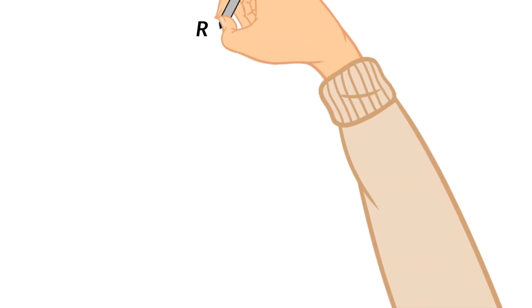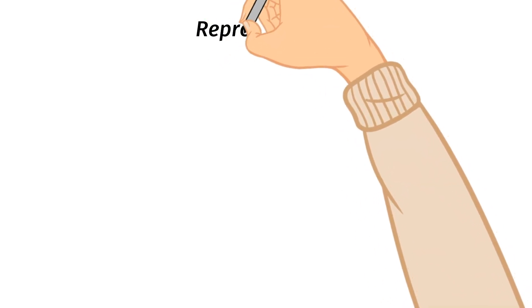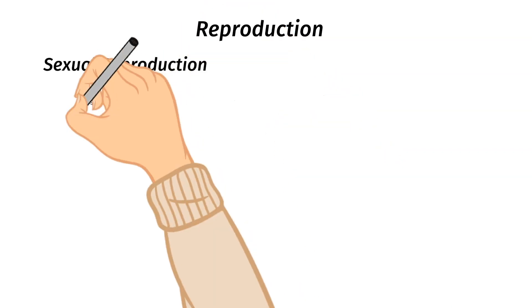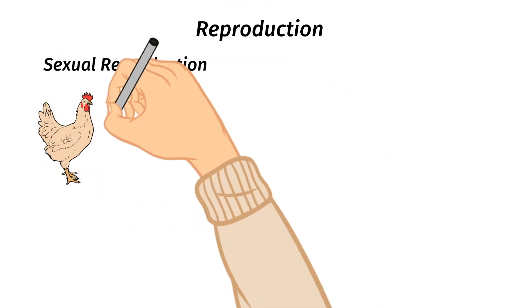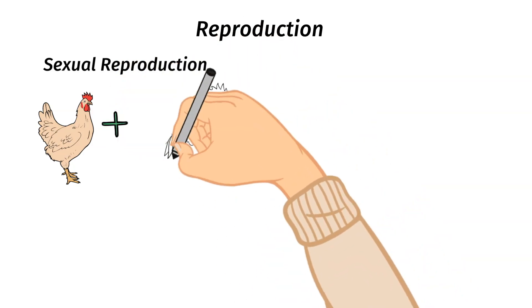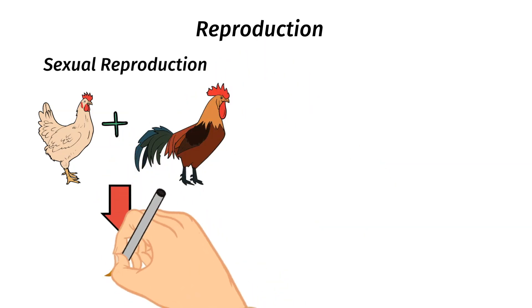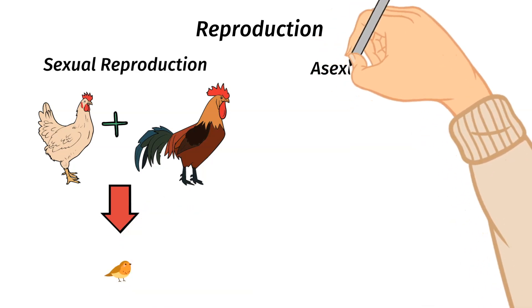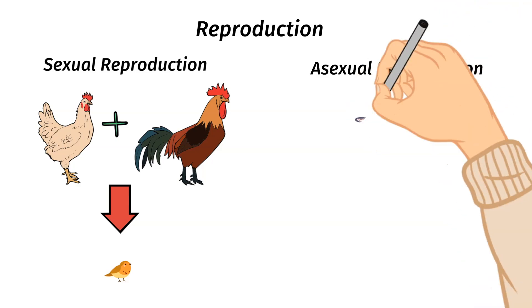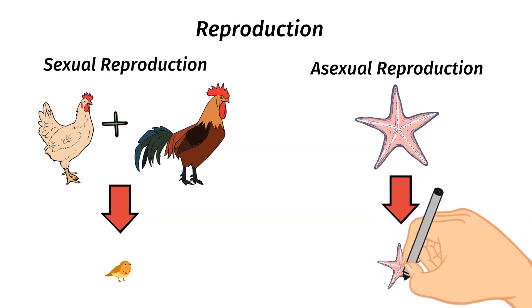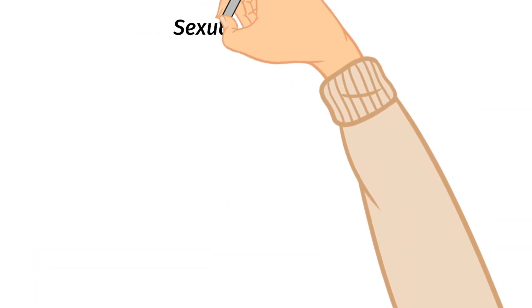Without further ado, let's start doodling. Today we are going to talk about the different ways that animals reproduce. Mainly there are two ways, and then we can break each of those down into two categories. The first way is through sexual reproduction, where two parents come together and their offspring share genetic characteristics from each parent. The second way is through asexual reproduction, where there is only ever one parent, and the offspring are genetically the same as the parent. Let's jump in to sexual reproduction.